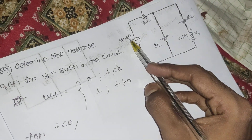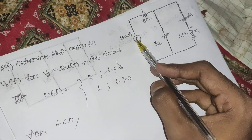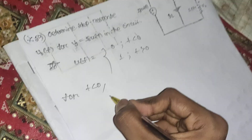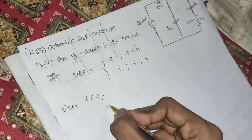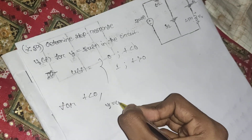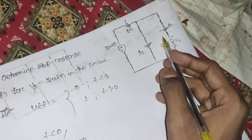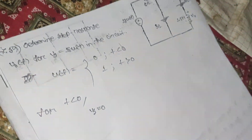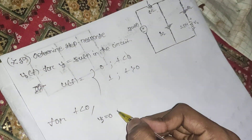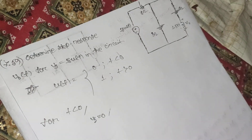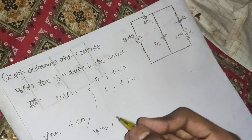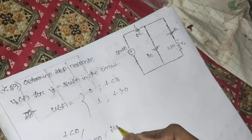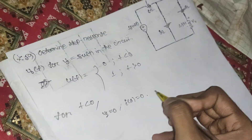If u(t) goes to 0, then the whole voltage source will be 0. So the voltage source is 0, no current flows through the inductor, and therefore i(0) equals 0.